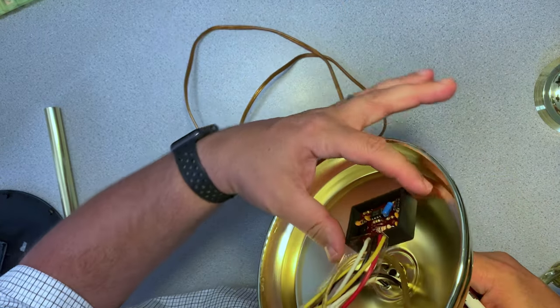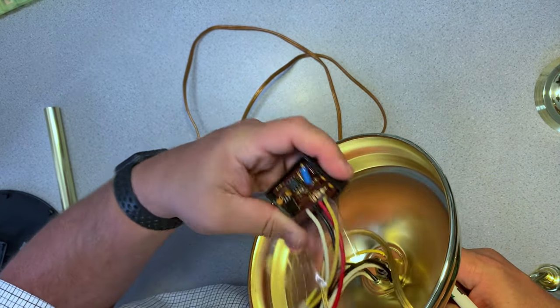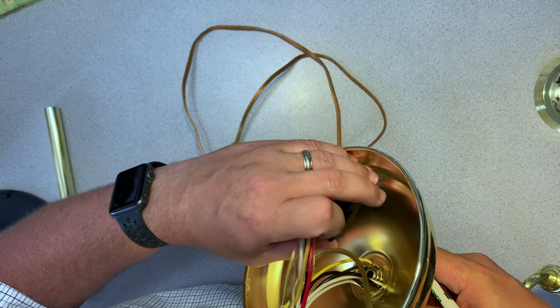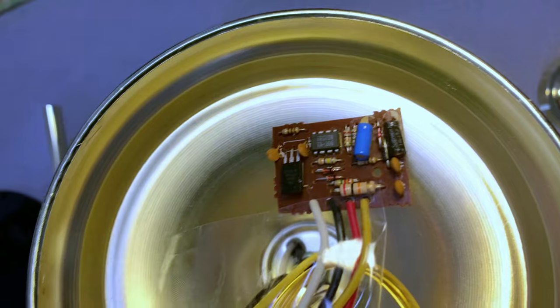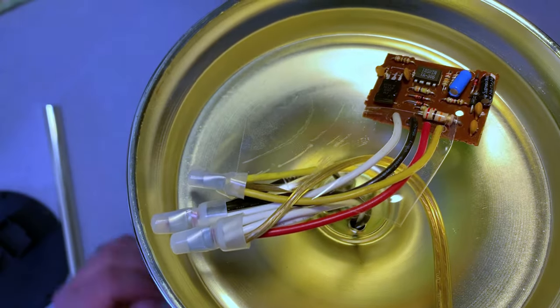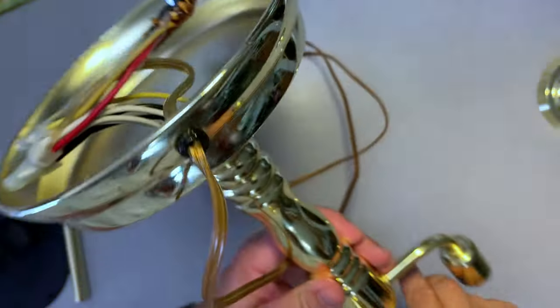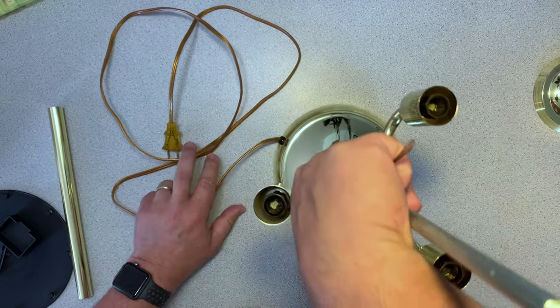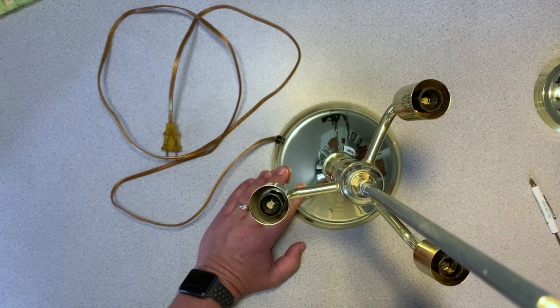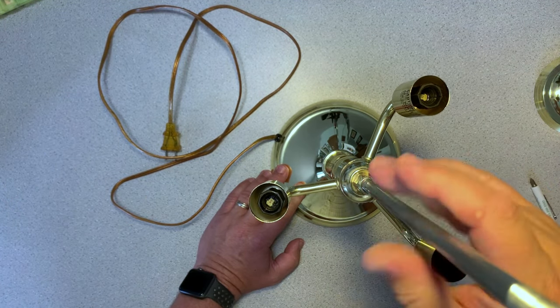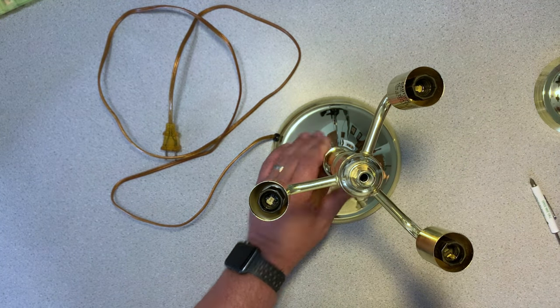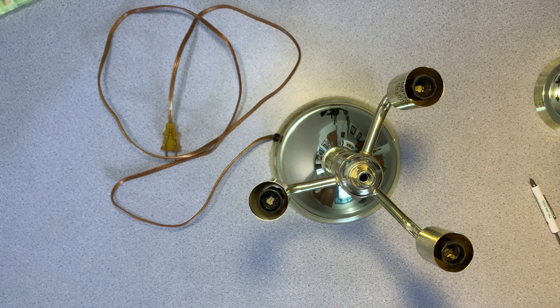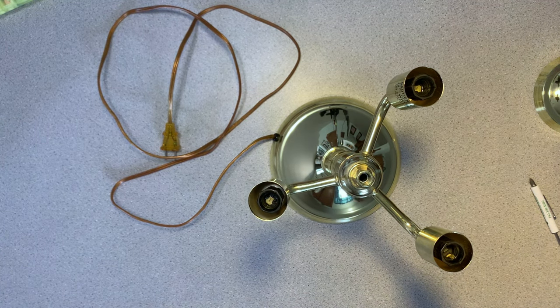When we turn the base over we can see inside we have this little control module and the wires for the lamp. The wires themselves look really good so I'm sure it's not that, so it has to be the control module. We'll order one and then replace the one that's there. To make it easier I'm going to remove this shaft and then I can turn the lamp over and it'll stay steady.